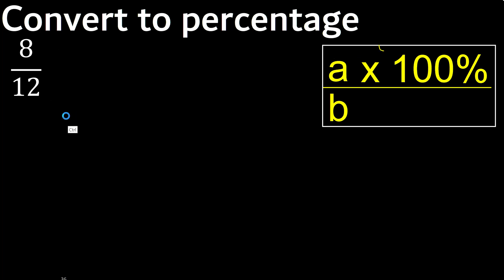Multiply by 100. 8 multiplied by 100 is 800% divided by 12.